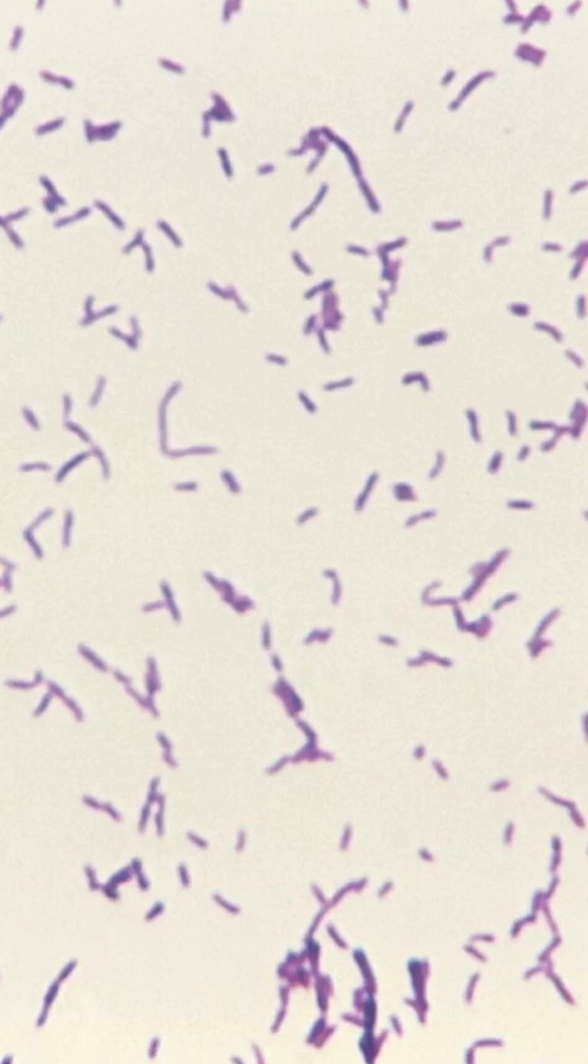This is a gram stain of gram-positive rods, which is the morphology of Listeria. So the organism stains purple under the microscope, and if you look closely, you can see that it's shaped like a rod. So Listeria is a gram-positive bacillus.